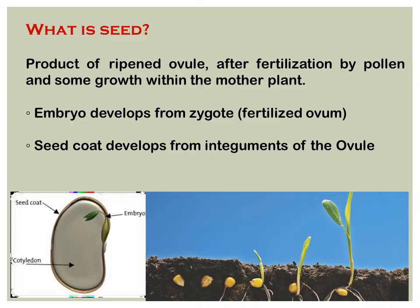So what is a seed? A seed is nothing but a fertilized ovule — a ripened ovule after fertilization by the pollen — with some growth within the mother plant. The embryo develops from the zygote, that is the fertilized ovum, and the seed coat develops from the integuments of the ovule.